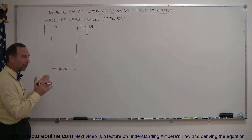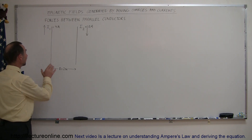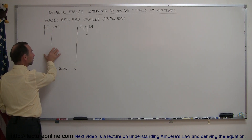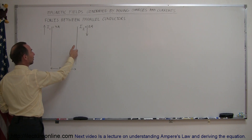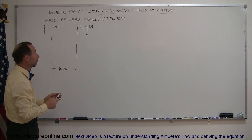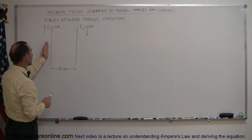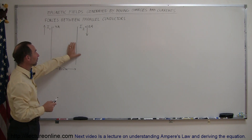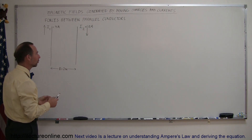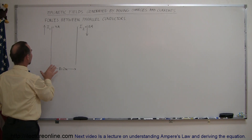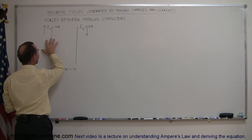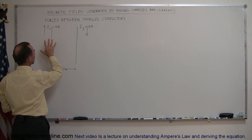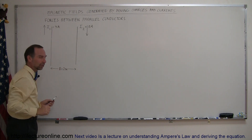Why would there be any forces between them? Well, each of these conductors will have a magnetic field around them. Conductor number 2 is in the presence of the magnetic field caused by conductor number 1, so it will feel a force, and conductor number 1 is in the presence of the field of conductor number 2, so it will feel a force. The strategy is to find the magnetic field strength and direction caused by each conductor.